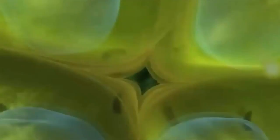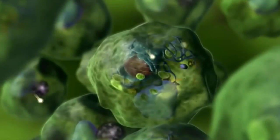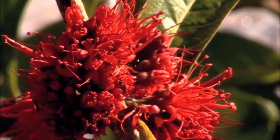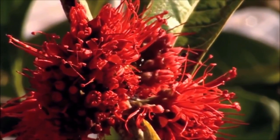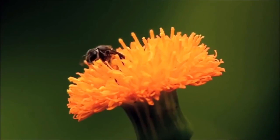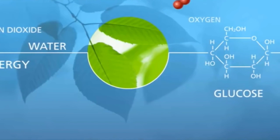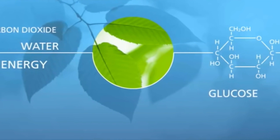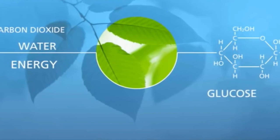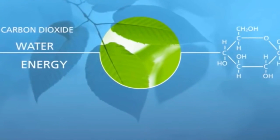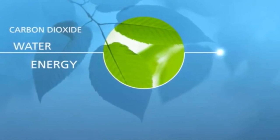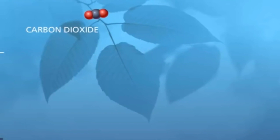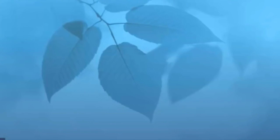A reverse process to photosynthesis is called cellular respiration. It occurs in all living cells, including both plants and animals. Here, carbohydrates like glucose are broken down to release carbon dioxide, water, and energy which is stored as ATP.